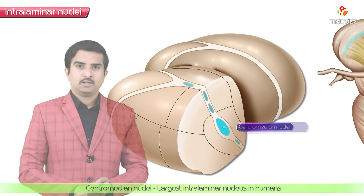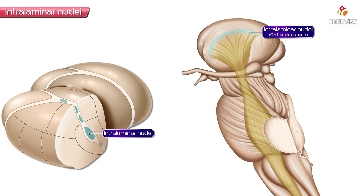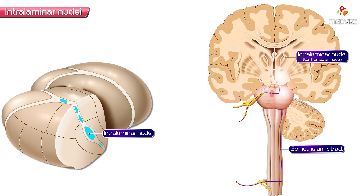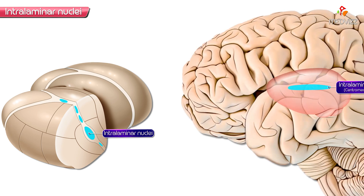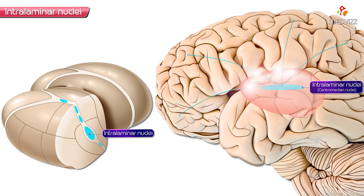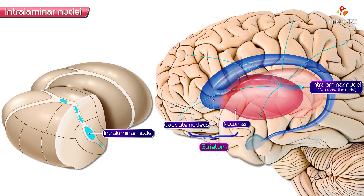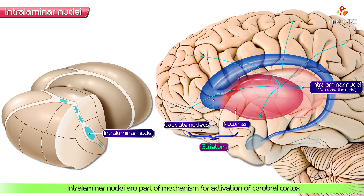The intralaminar nuclei receive ascending afferents from the brainstem reticular formation and also from the spinothalamic and trigeminothalamic systems. After receiving these afferents, they project to widespread regions of the cerebral cortex and also to the caudate nucleus and putamen of the basal ganglia — these are the efferents from these nuclei.